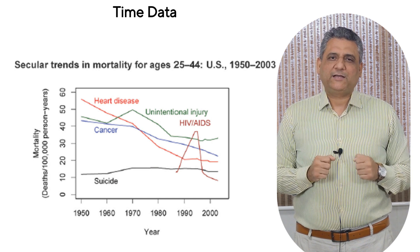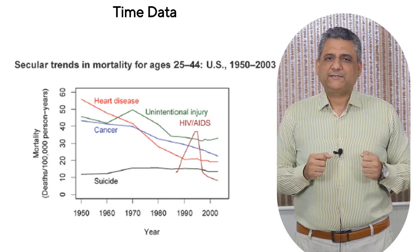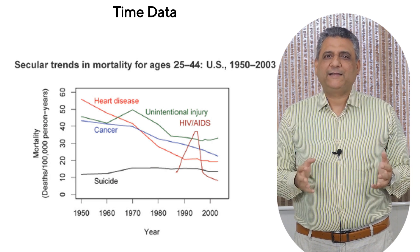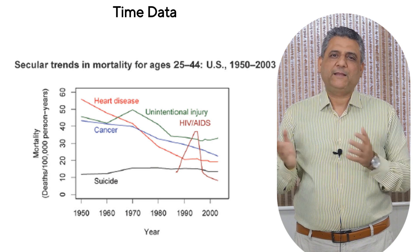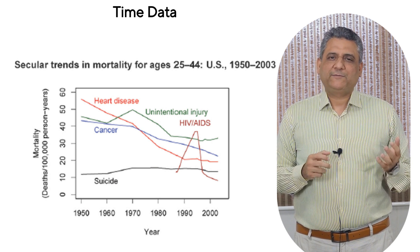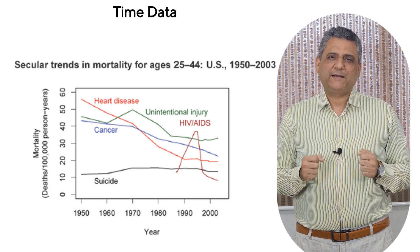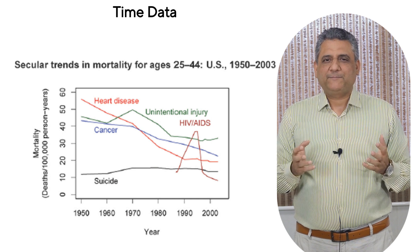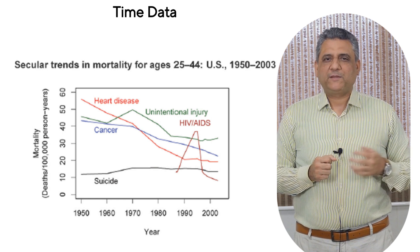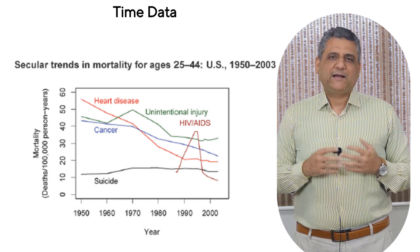Cancer mortality also declined, but much more slowly. What does this tell us about the pace of progress and the limits of medical technology over time? Then there's the sharp rise and fall of HIV-AIDS — a powerful reminder of how epidemics and public health responses unfold across time. How does studying trends over time help us identify when an epidemic peaks and when control measures begin to work? Time doesn't just add numbers; it adds context. By looking at data across years, we begin to see the rhythm of population health — the stories of progress, crisis, and persistence that a single moment in time could never show.